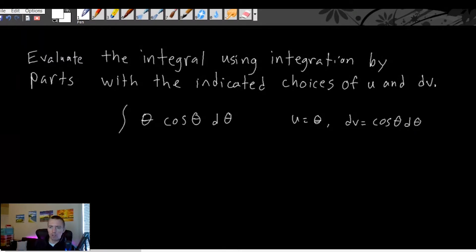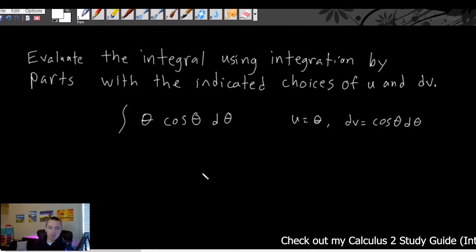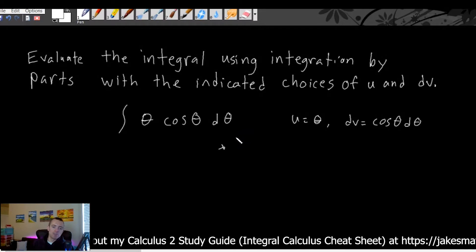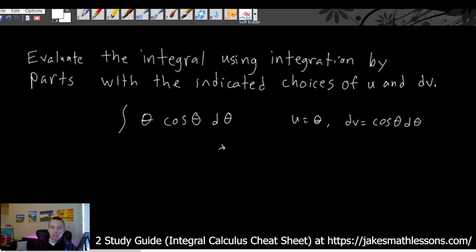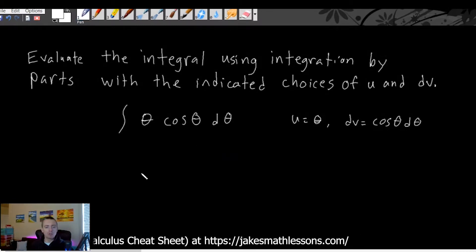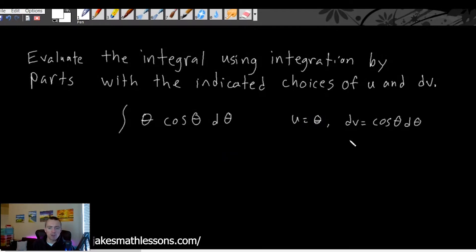Just a quick note about integration by parts problems: the first step is applying the integration by parts formula, but before that you need to determine which piece of your function is going to be u and which piece is going to be dv. A good rule of thumb is to pick u to be whichever thing is easier to take the derivative of, and dv to be whichever thing is easier to integrate.